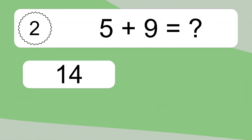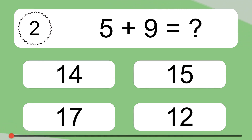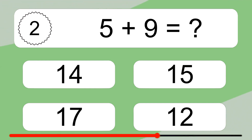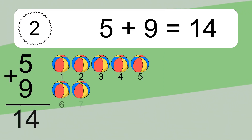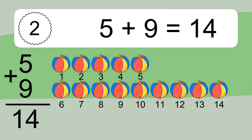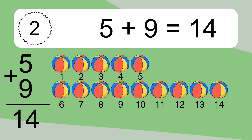5 plus 9 equals what? 5 plus 9 equals 14. Let's count it: 1, 2, 3, 4, 5, 6, 7, 8, 9, 10, 11, 12, 13, 14.